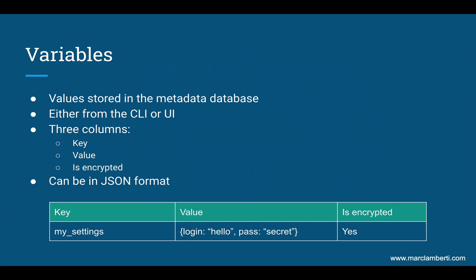Basically, a variable is composed by a key and a value. The key exists in order to be able to get back the variable from your DAG by specifying that key. From the UI, there is a third column called isEncrypted, which indicates if the variable is encrypted or not, which is very useful for hiding credentials, for example.